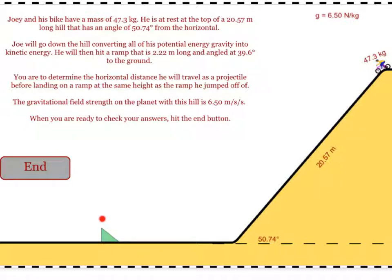Once he goes off the ramp, he will be a projectile, and you treat it just like any other projectile problem. He will land on another ramp with equal height to the first, so his net displacement in the vertical direction as a projectile will be zero.